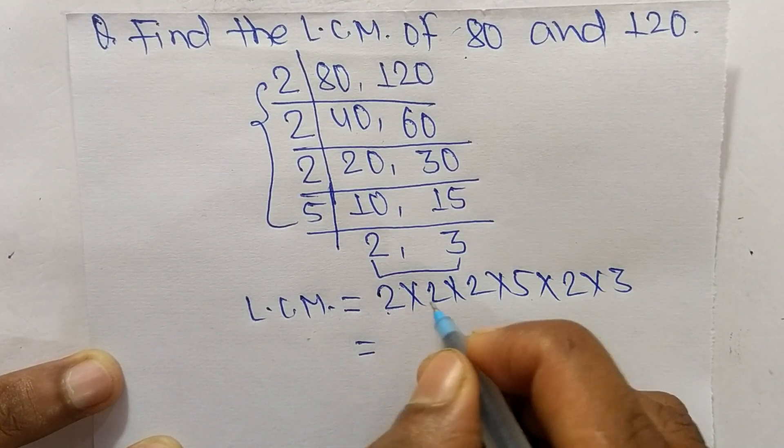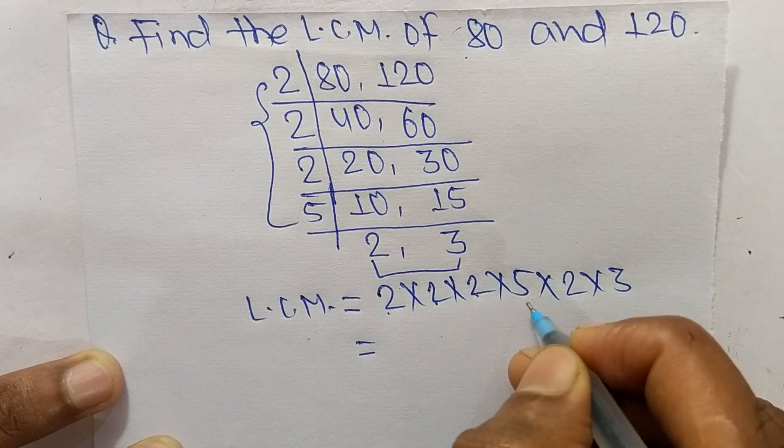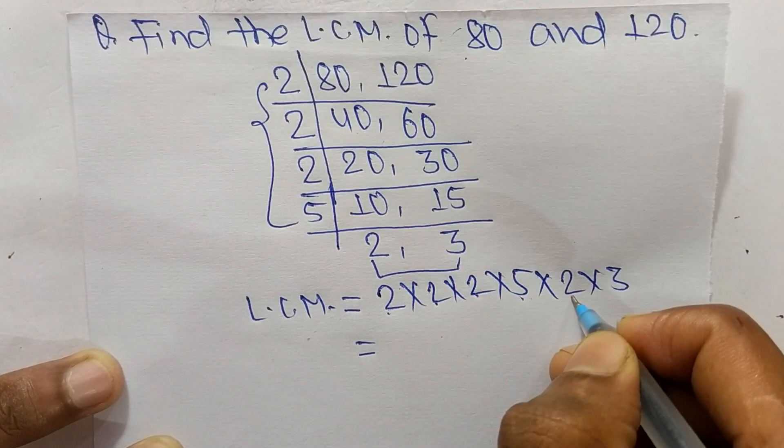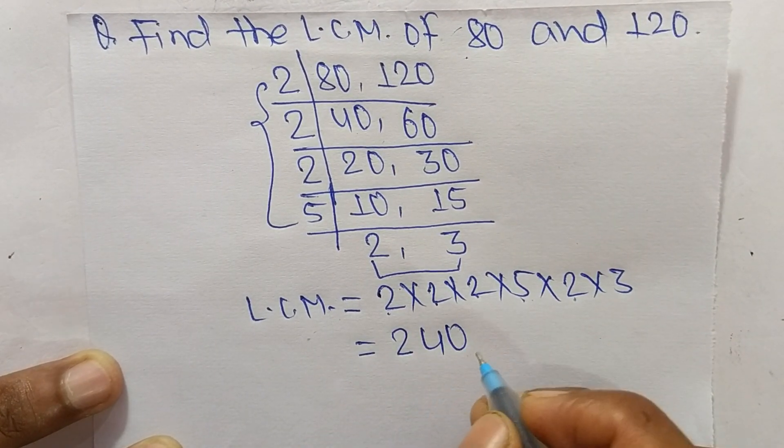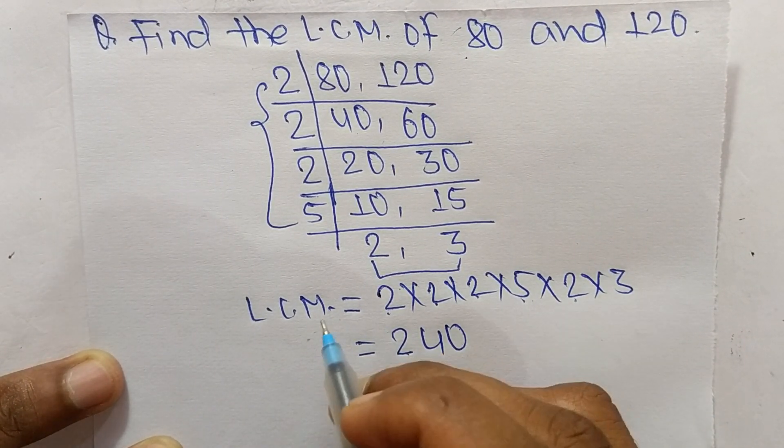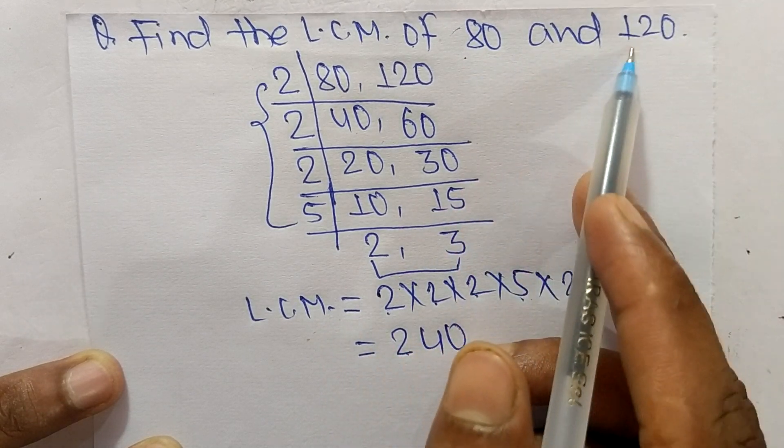So 2 times 2 equals 4, 4 times 2 equals 8, 8 times 5 equals 40, 40 times 2 equals 80, 80 times 3 equals 240. So 240 is the LCM of 80 and 120.